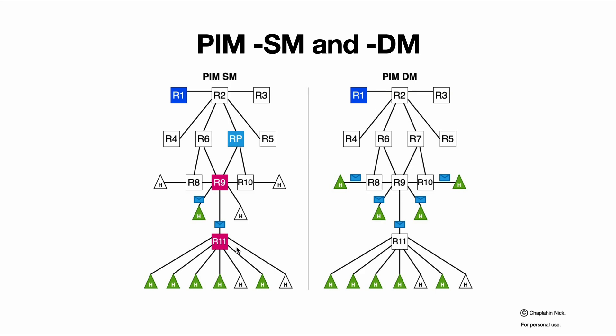SM sends frames to only directions where receivers are. DM sends frames to everybody. SM sends to receivers only, so we have a topology on SM.